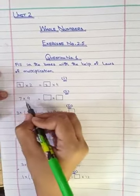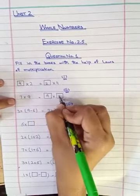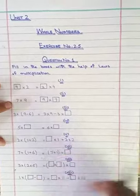In this way, we will write 7 times 9, 7, 9 times 7. The order will change. The result will remain the same. In this way, we will write question number 2.